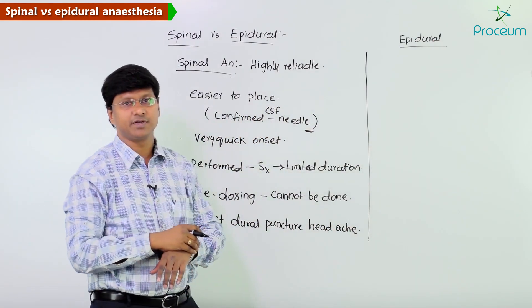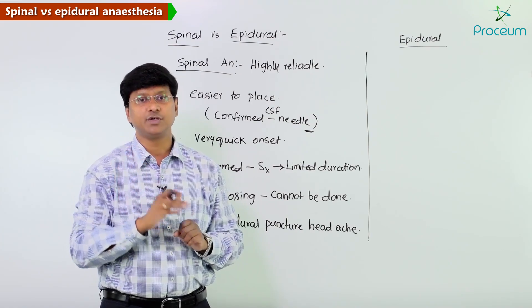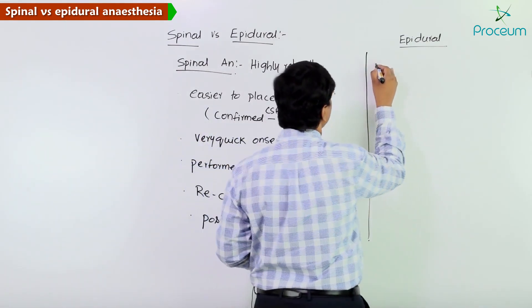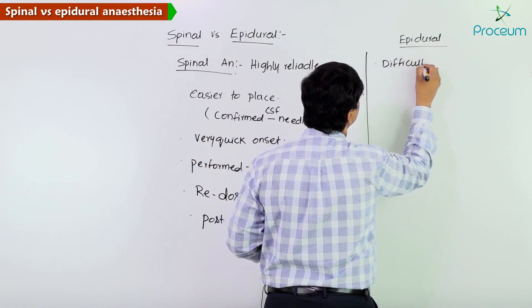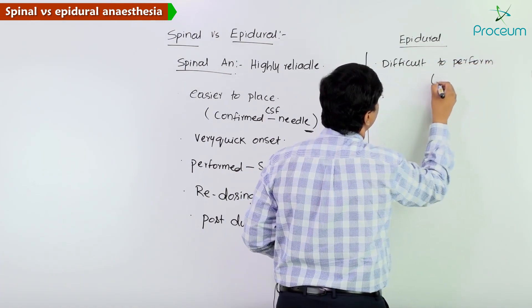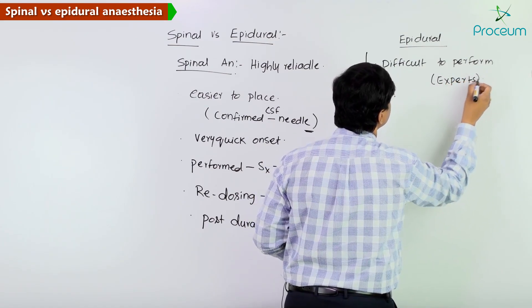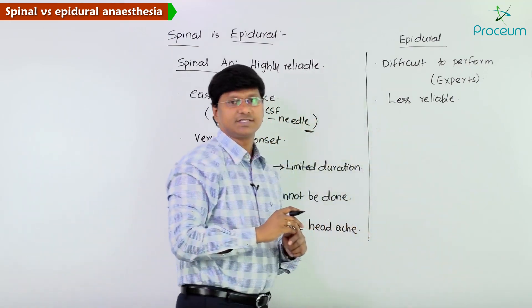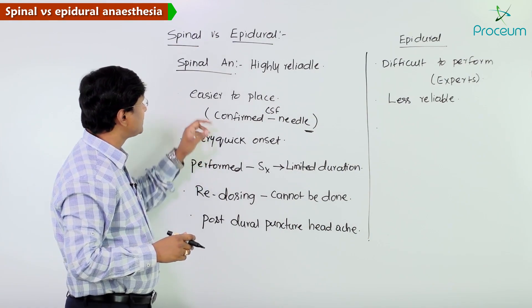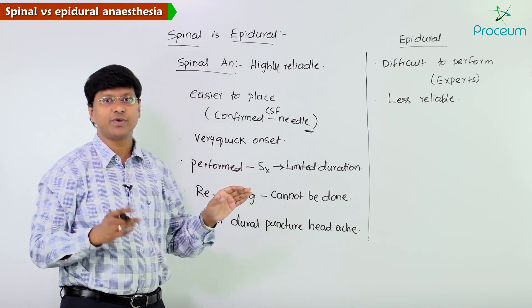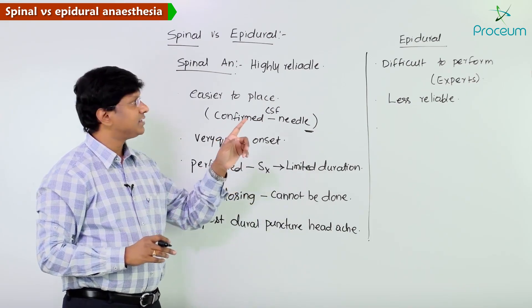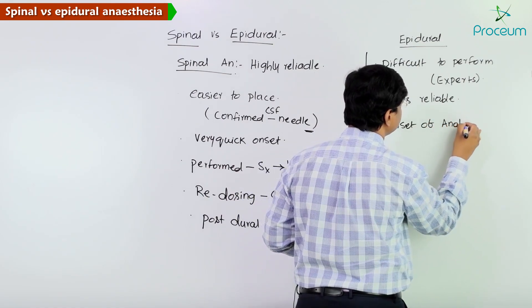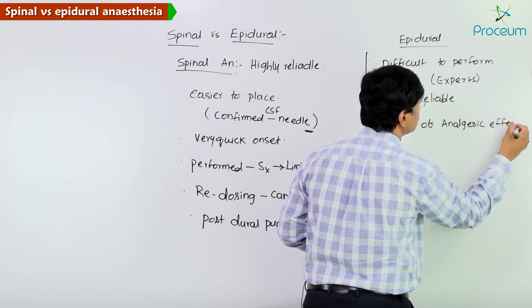Now comparing with epidural anesthesia: the problem with epidural anesthesia is that it is very difficult to perform. Only expert persons can do this, therefore it is less reliable. The onset of analgesic effect with epidural anesthesia is also much slower compared to spinal anesthesia.